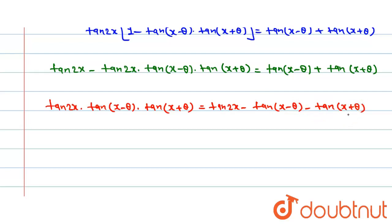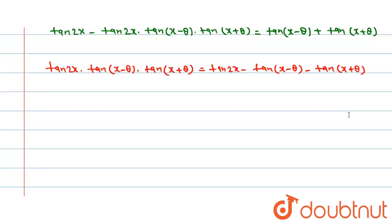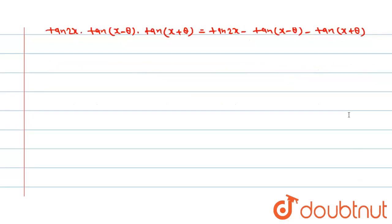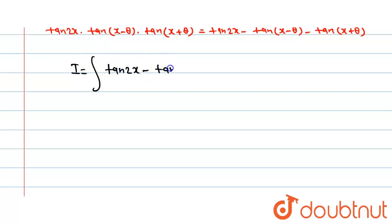Now we substitute the value of tan(2x) into tan(x − θ) into tan(x + θ) in the integration. So we get in the next step, I is equal to the integration of tan(2x) minus tan(x − θ) minus tan(x + θ) dx.